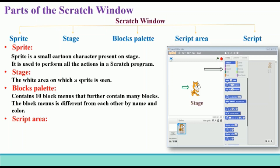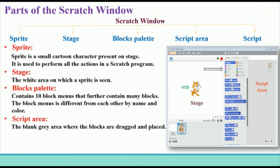Script Area: the blank gray area on the right of the block list is called the Script Area. This is where the blocks are dragged and placed to create a script. Scripts are formed when blocks are joined together to perform a task.